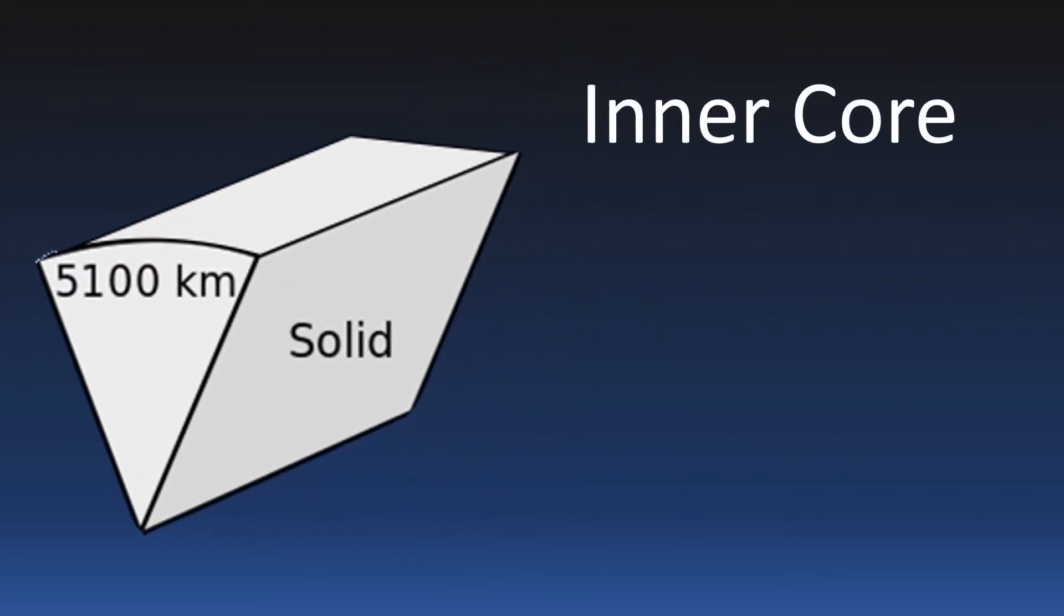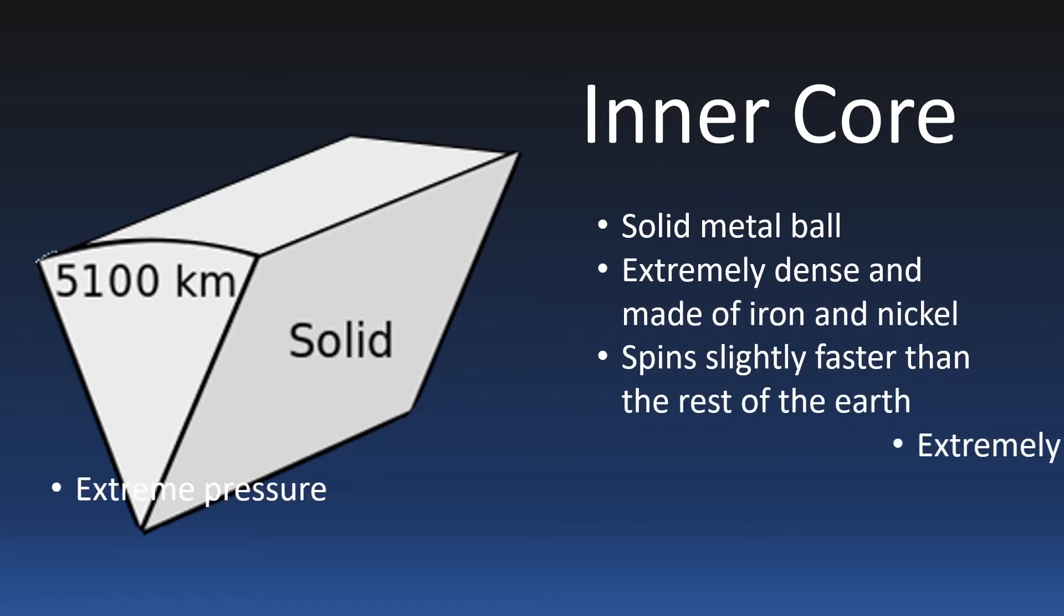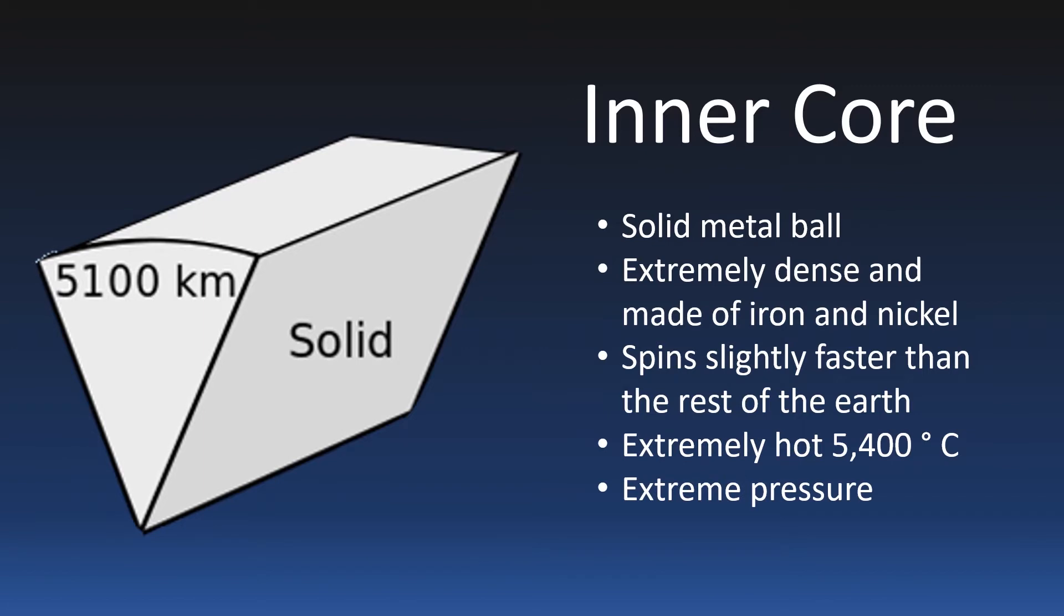The inner core is a solid metal ball with a radius of 1,220 kilometers, or about three quarters of the moon. It is located some 6,400 to 5,180 kilometers beneath the Earth's surface and is extremely dense.